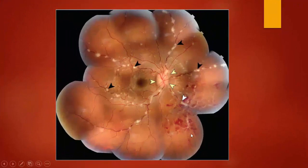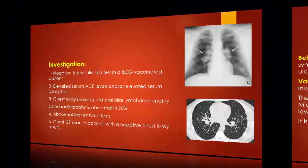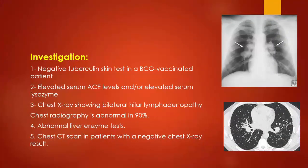This photo shows the periphlebitis and optic nerve lesion. Investigations for sarcoidosis include a negative tuberculin test in a previously BCG-vaccinated patient. Angiotensin-converting enzyme levels show elevated serum ACE and serum lysozyme. Chest X-ray shows hilar lymphadenopathy. If chest X-ray is clear, chest CT can be done to detect sarcoid nodules.